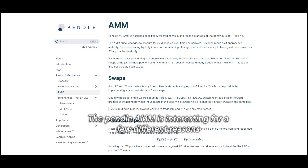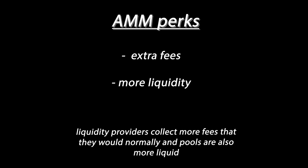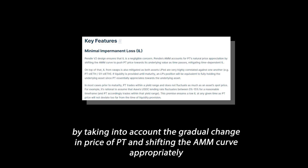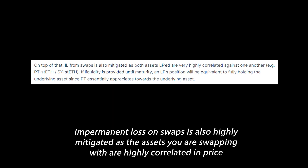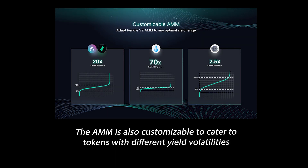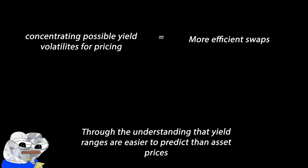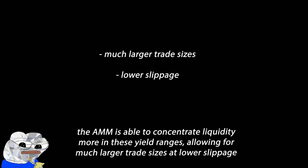The Pendle AMM is interesting for a few different reasons. By allowing users to trade between all three token types in one pool, liquidity providers collect more fees than they would normally, and pools are also more liquid. The AMM is also great at minimizing impermanent loss by taking into account the gradual change in price of PT and shifting the AMM curve appropriately. Impermanent loss on swaps is also highly mitigated as the assets you are swapping with are highly correlated in price. The AMM is also customizable to cater to tokens with different yield volatilities, and through the understanding that yield ranges are easier to predict than asset prices, the AMM is able to concentrate liquidity more in these yield ranges, allowing for much larger trade sizes at lower slippage.